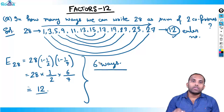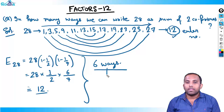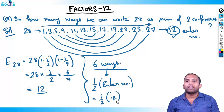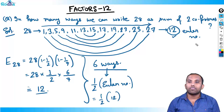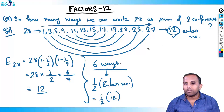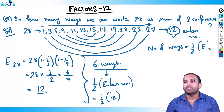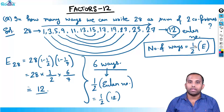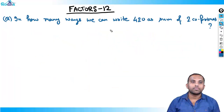Do we need to write all these numbers every time? No. Six is half of the Euler number, which is half of 12. So the general rule is: the number of ways to write a number as a sum of two co-primes equals half of the Euler number. Let's apply this to a bigger number.